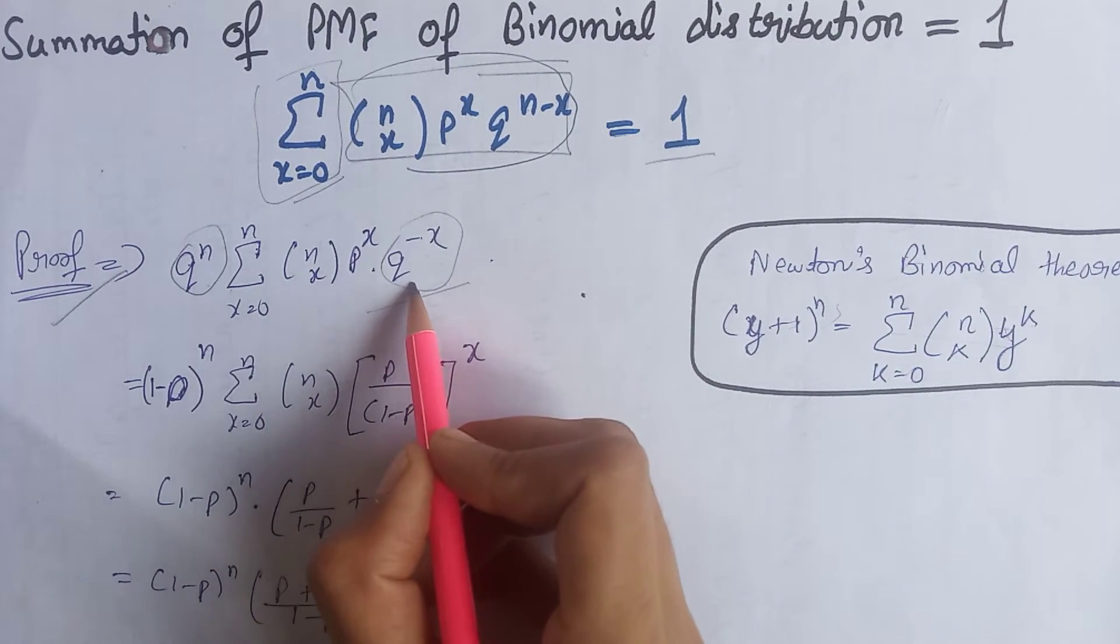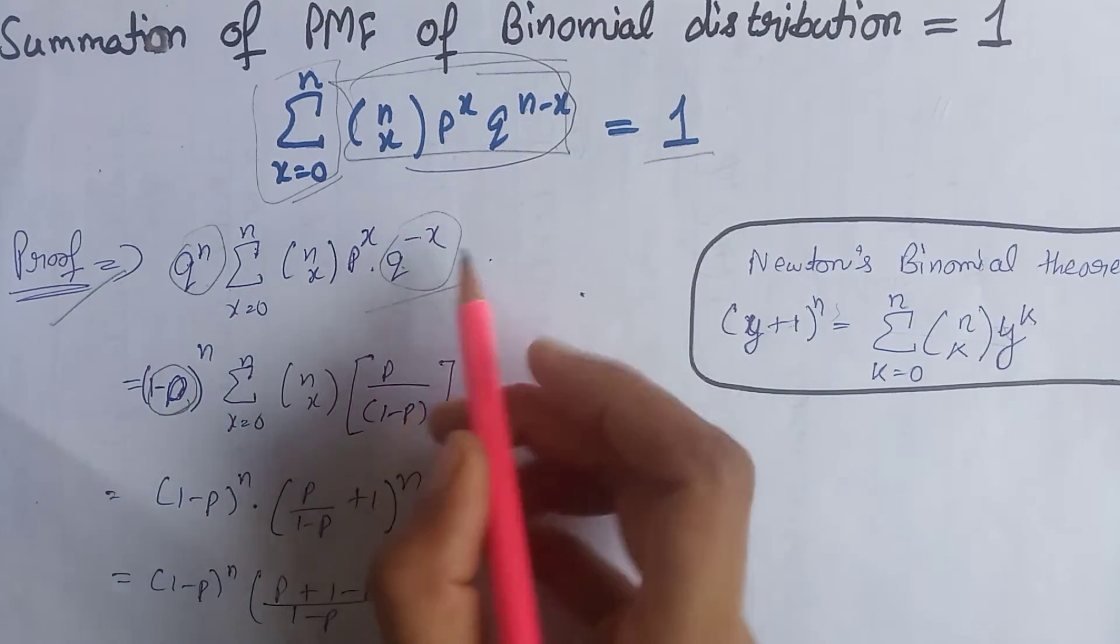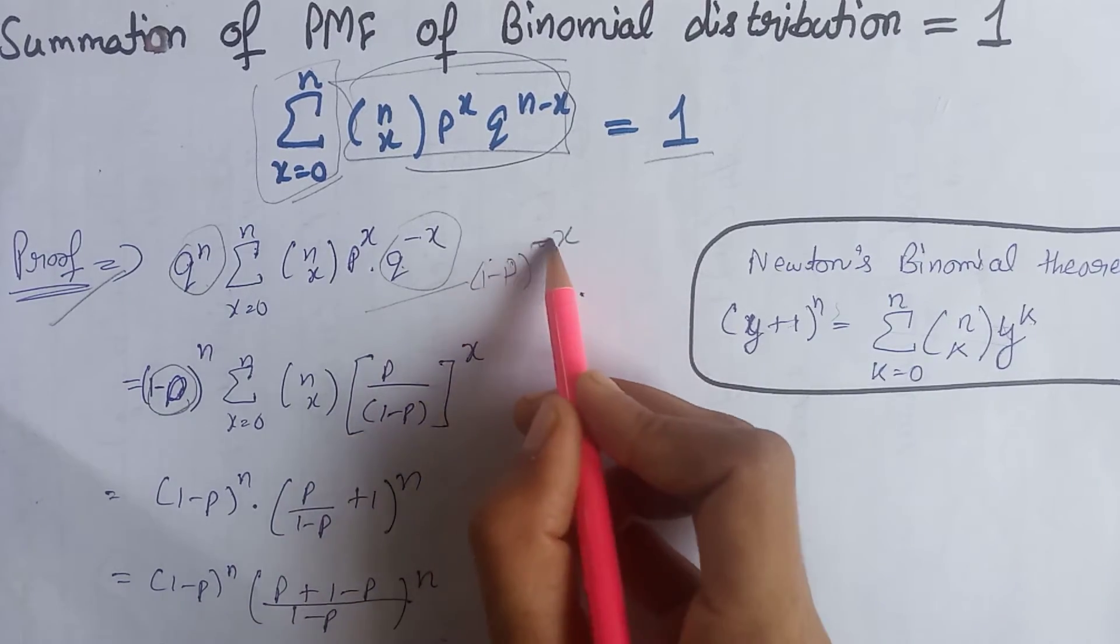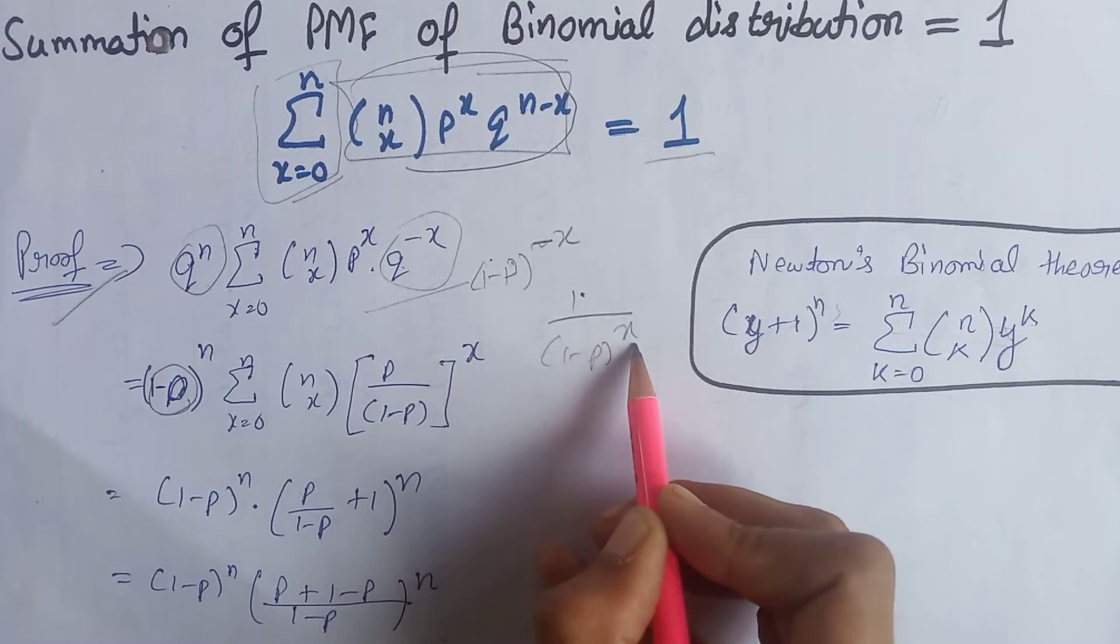And we know that q is equals to 1 minus p. That's why we write here 1 minus p. Here, we also write 1 minus p raised to power minus x. We can write this term as 1 divided by 1 minus p raised to the power positive x.